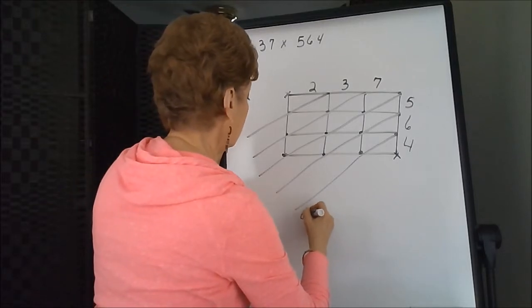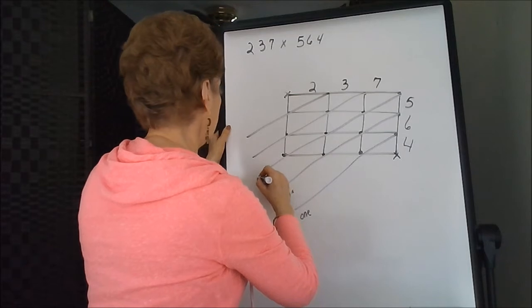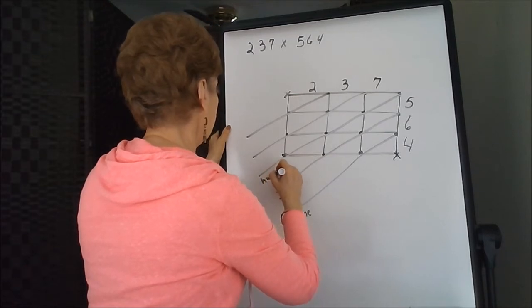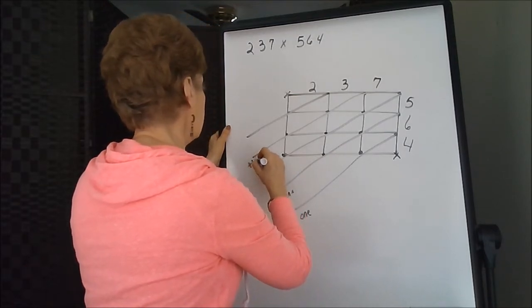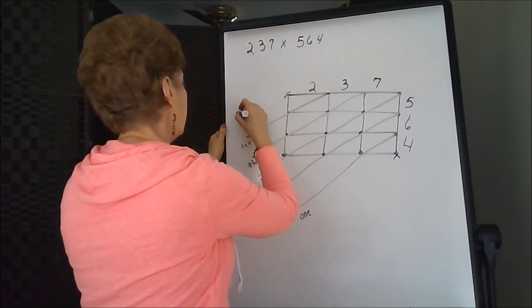This is the ones column, the tens, the hundreds, the thousands, the ten thousands, and the hundred thousands.